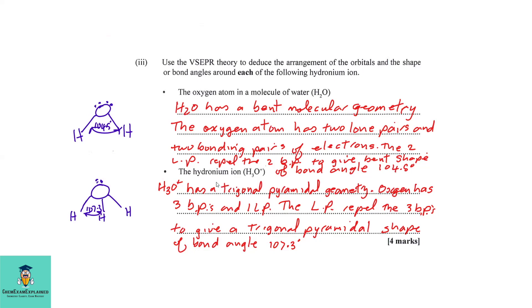For the hydronium ion, H3O+ has a trigonal pyramidal geometry. The oxygen has three bonding pairs and one lone pair. The lone pair repels the three bonding pairs to give a trigonal pyramidal shape of bond angle 107.3 degrees.